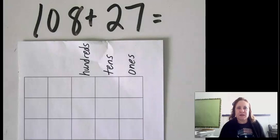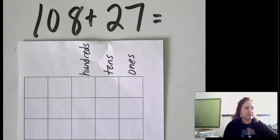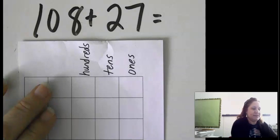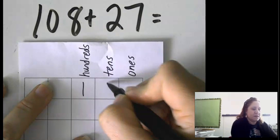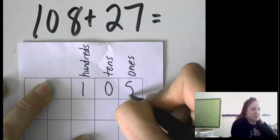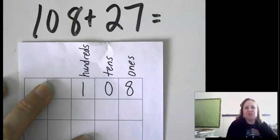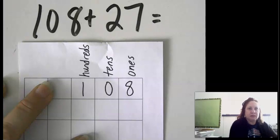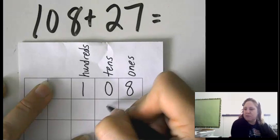This time our numbers are 108 and 27 that we're adding up. Make sure that you are lining up your numbers perfectly in the right place value column.